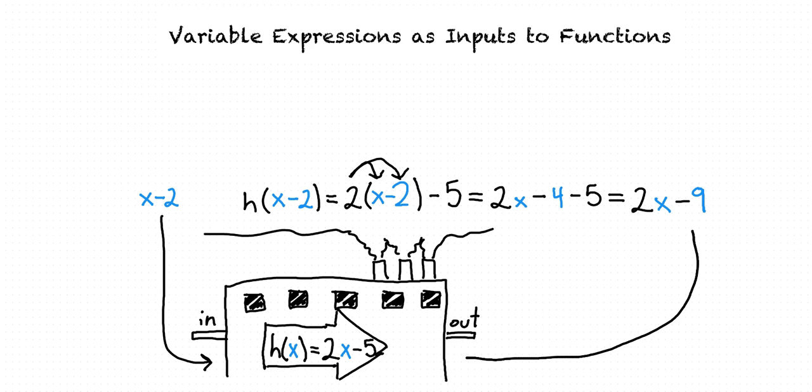And that is the output of our factory. Why is there a variable in our output? Shouldn't it just be a number? Since our input wasn't a number, but instead it was an expression including variables, it's alright for our output to still include variables, since depending on the value of x, our output would have a different value.